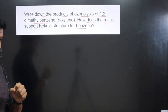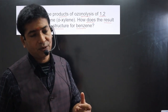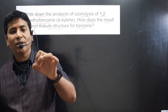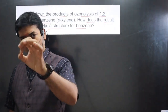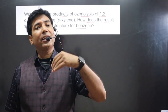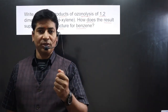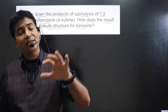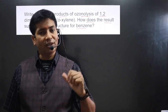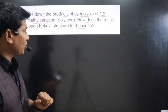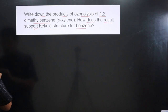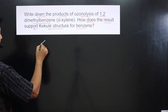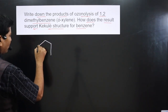According to Kekulé, there are two structures for benzene due to delocalization of electrons. Always keep in mind the benzene ring has a conjugated system — double bond, single bond, double bond, single bond. Due to this conjugated system there is resonance, and due to resonance there is delocalization of electrons, giving two possible structures for benzene.